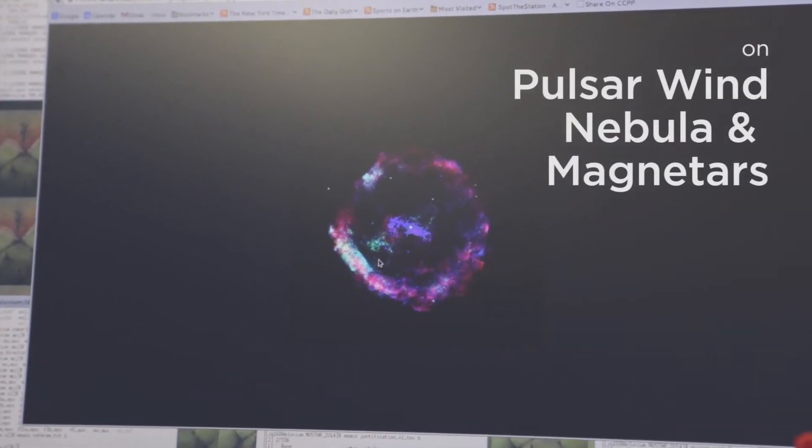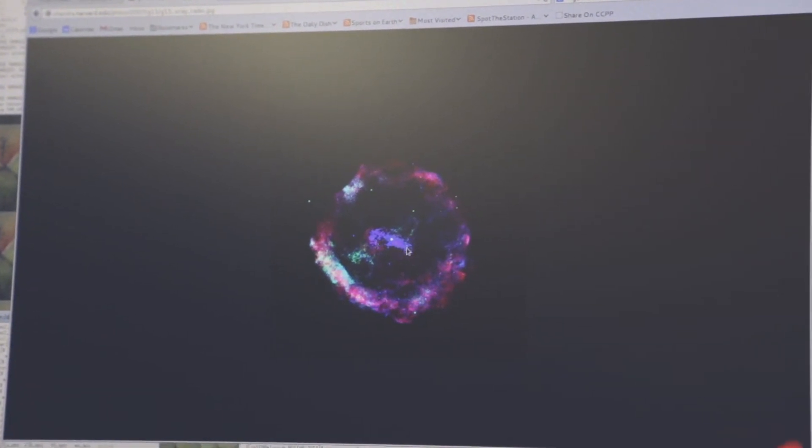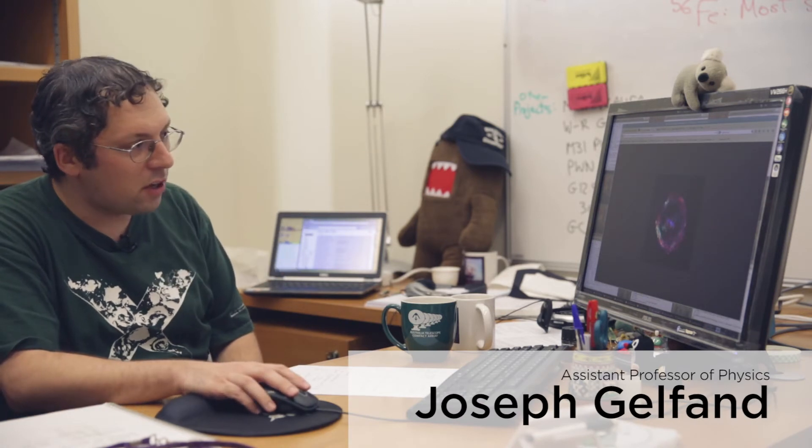An image of one example in our Milky Way. This image was done by my colleague Mallory Roberts, whose office is right on the other side of this whiteboard. That little dot in the center is the neutron star.